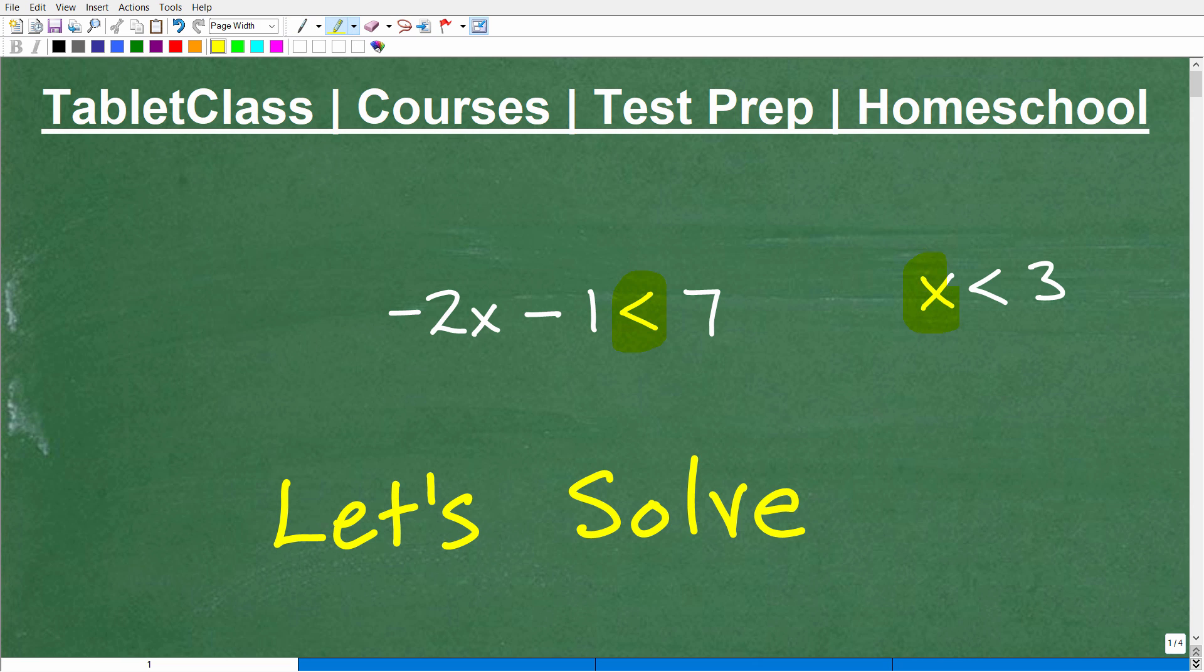What is the answer to this problem? Okay, well, if you said 2, okay, x must be 2 because 2 is less than 3. Well, that's pretty good. That's a pretty good answer. However, are there any more answers? Well, yeah, 1 is less than 3. 0 is less than 3. Matter of fact, 2.87 is less than 3. So how many answers can x be?